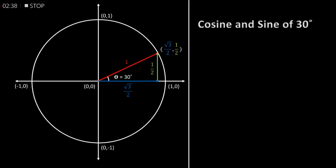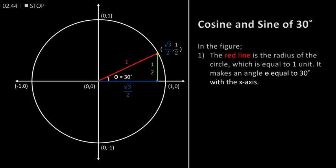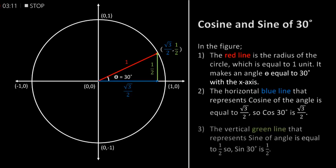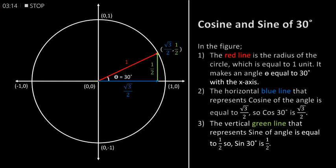Cosine and sine of 30 degrees. In the figure, the red line is the radius of the circle which is equal to one unit. It makes an angle theta equal to 30 degrees with the x-axis. The horizontal blue line that represents cosine of the angle is equal to half of square root of 3, so cos of 30 degrees is equal to half of square root of 3. The vertical green line that represents sine of the angle is equal to 1 by 2, so sine of 30 degrees is equal to 1 by 2.